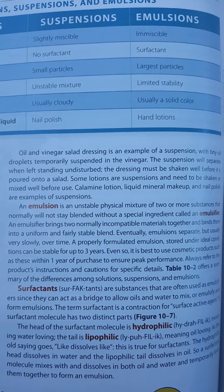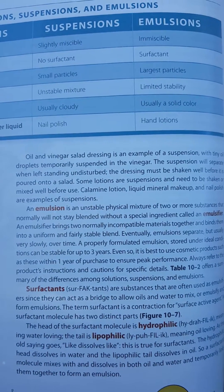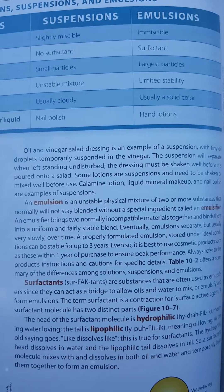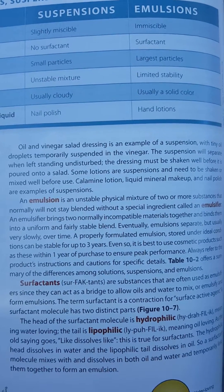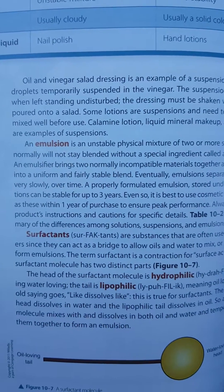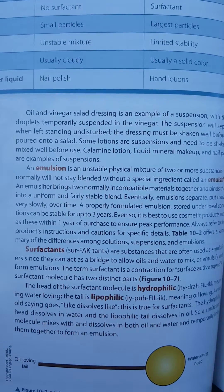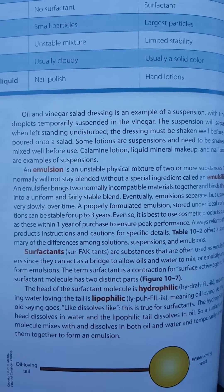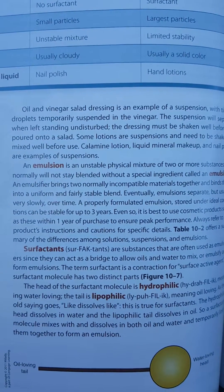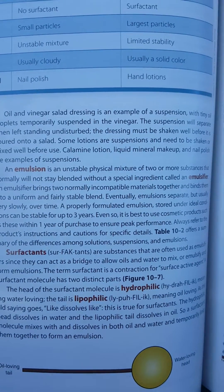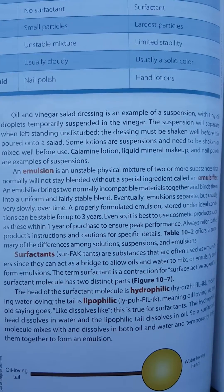Surfactants are substances that are often used as emulsifiers, since they can act as a bridge to allow oils and water to mix or emulsify and form emulsions. The term surfactant is a contraction for surface active agent. A surfactant molecule has two distinct parts: the head of the surfactant molecule is hydrophilic, meaning water-loving, and the tail is lipophilic, meaning oil-loving. As the old saying goes, like dissolves like — this is true for surfactants. The hydrophilic head dissolves in water and the lipophilic tail dissolves in oil, so a surfactant molecule mixes with and dissolves in both oil and water, temporarily linking them together to form an emulsion.